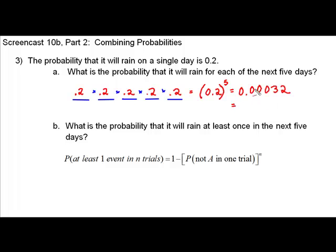Converted to a percent by multiplying by 100, that would still be a very small number — thirty-two thousandths of one percent. Not very likely based on the individual daily probabilities. Now we're going to look at the probability that it will rain at least once in the next five days.